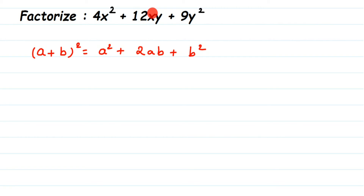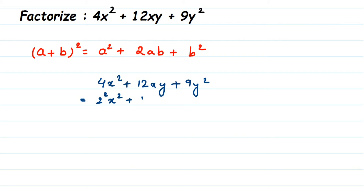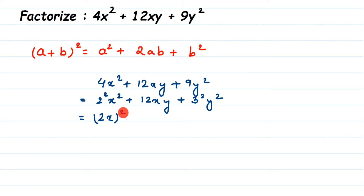I'm going to rewrite this question: 4x² + 12xy + 9y². Now 4 is 2², so this is 2²x² + 12xy, and 9 is 3², so this is 3²y². This can be written as (2x)² + 12xy + (3y)², because when the bases are different and powers are the same, the bases get multiplied — so 2 × x gives 2x, and the power remains 2.